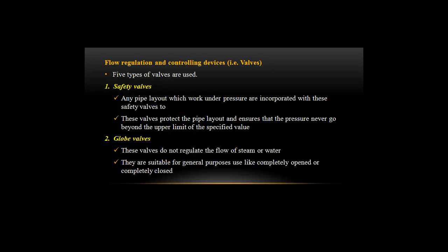Flow regulation and controlling devices: five types of valves are used. Safety valve: any pipe layout working under pressure is incorporated with safety valves. These valves protect the pipe layout and ensure that the pressure never goes beyond the upper limit of the specified value.